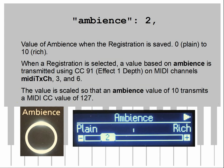The ambience setting is selected by the ambience button and plus/minus when the registration is saved. Range is zero (plain) to ten (rich or large space). For MIDI users: when a registration is selected, a value based on ambience is transmitted using CC91 (effect one depth). It's sent on the MIDI TX channel — the editable transmit main channel — channel 3 for the left half of a split, and channel 6 for the second of a dual. The value is scaled so that an ambience value of 10 transmits a MIDI CC value of 127.